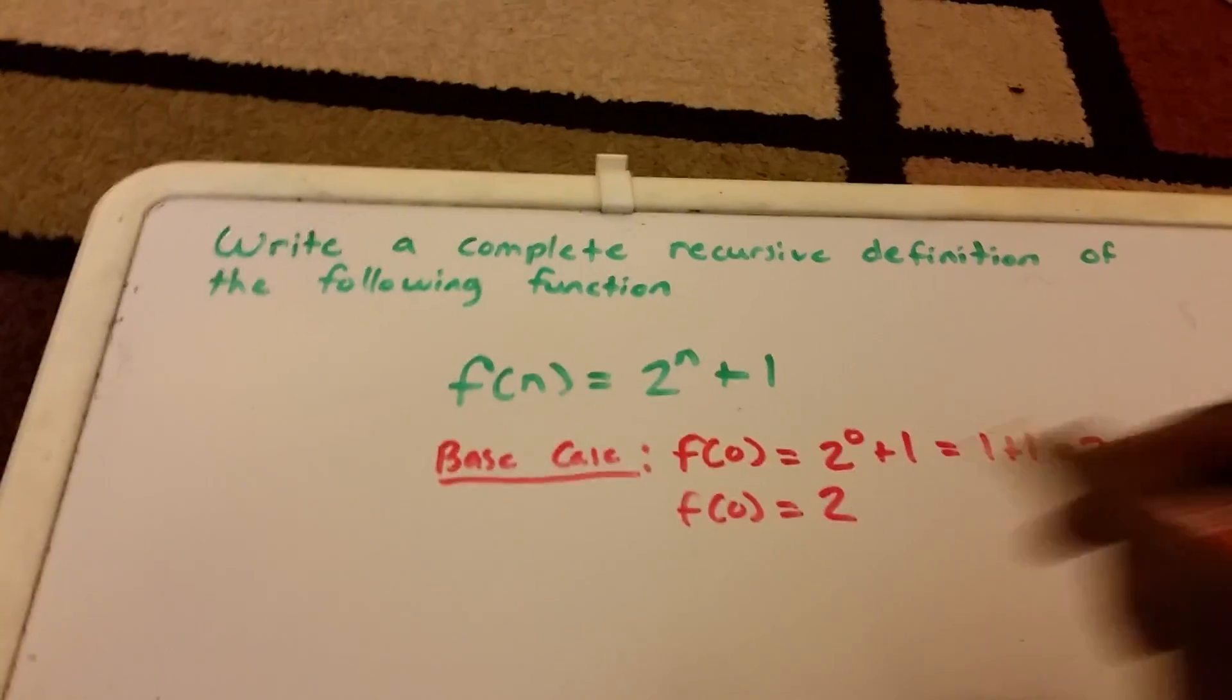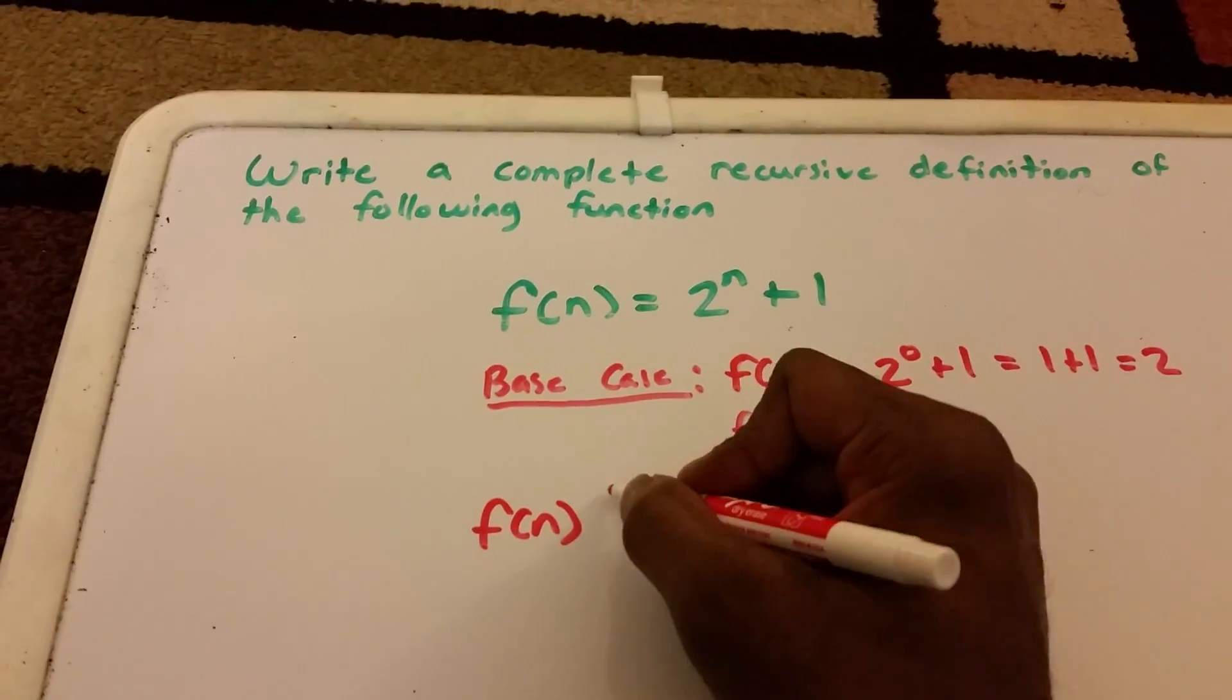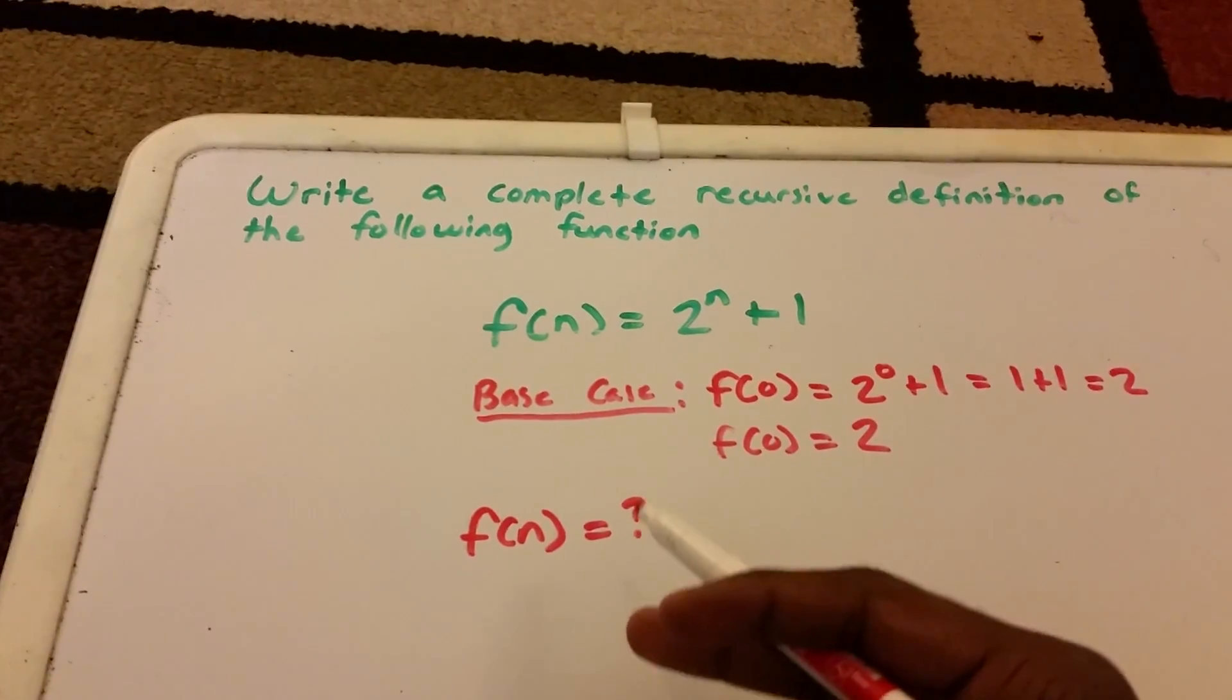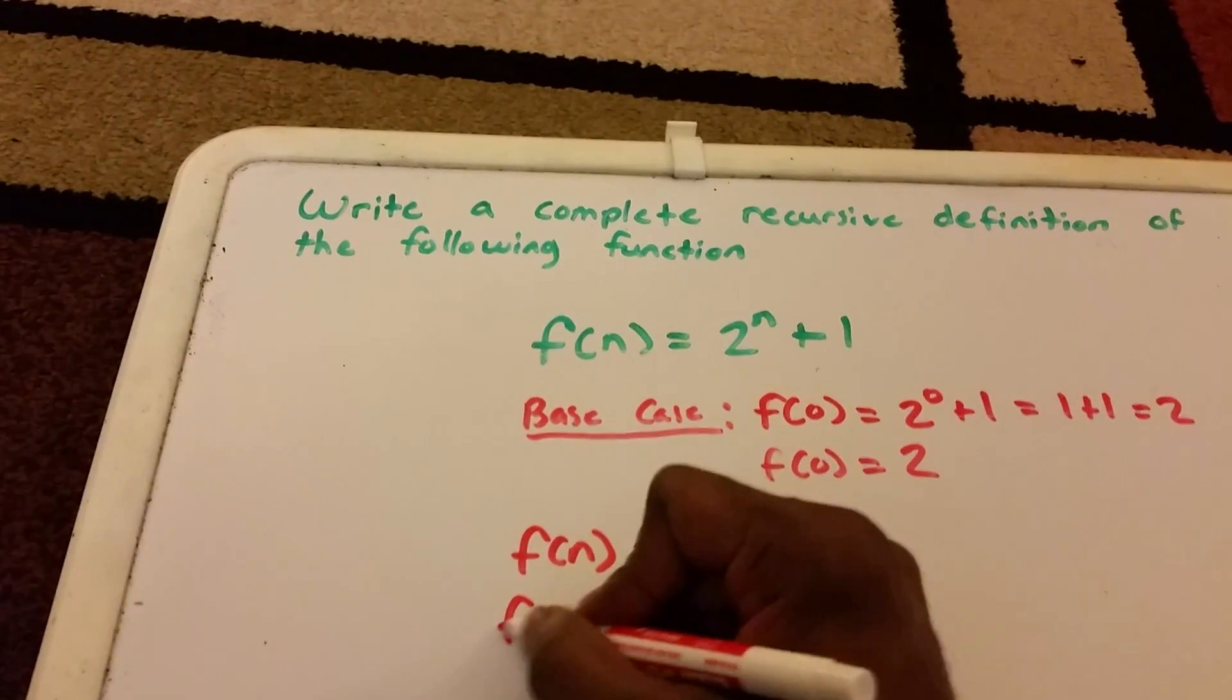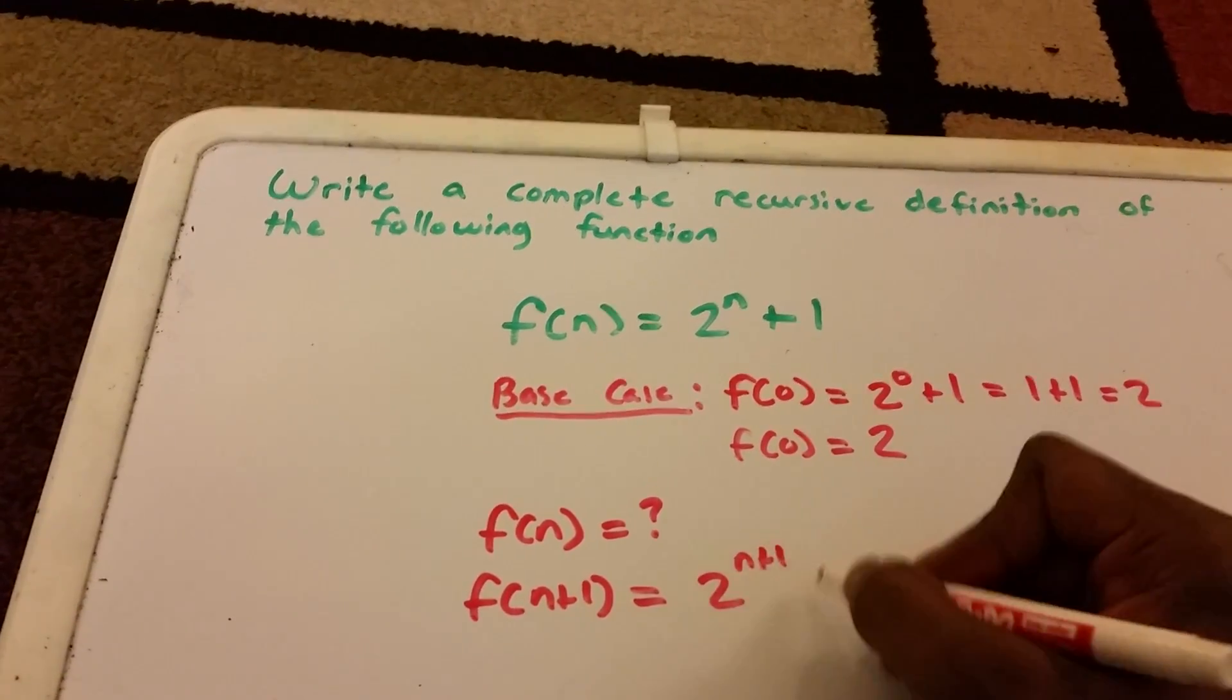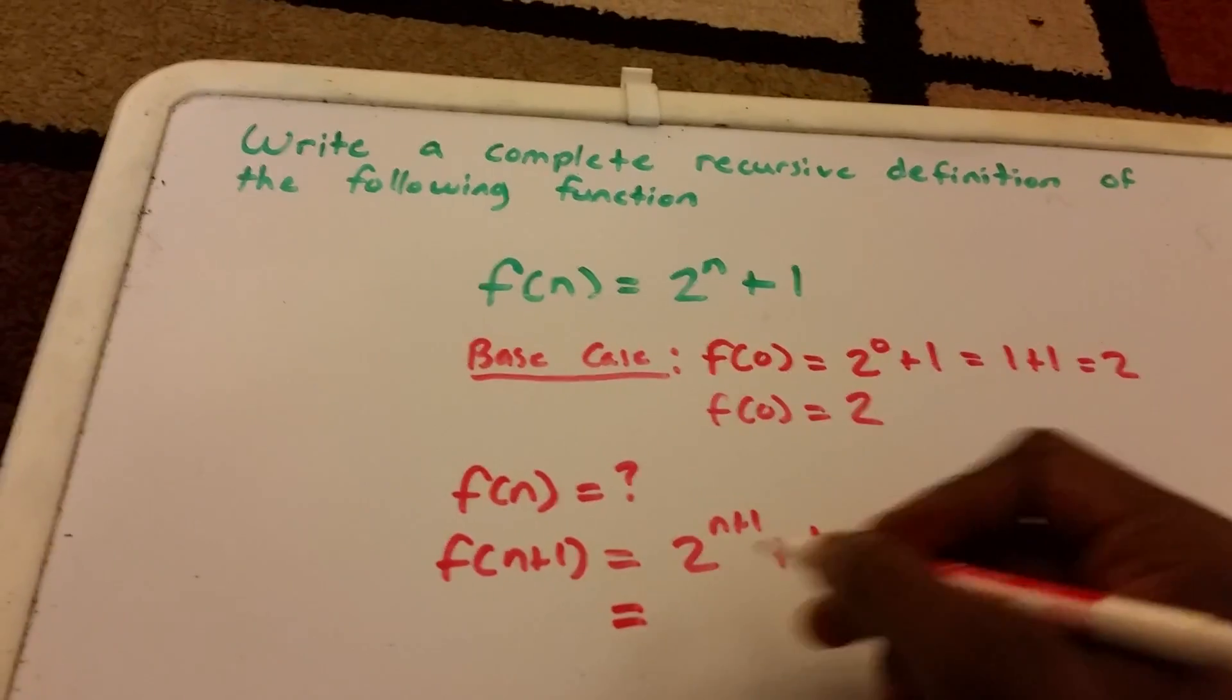Okay, so what is our f(n)? f(n) equals what? That's what we're trying to figure out now. Well, what we really want to do is see what the next step is, so we want to see what f(n+1) is to figure this out. So f(n+1) is equal to 2^(n+1) + 1, and now we got to do a little bit of manipulation here.